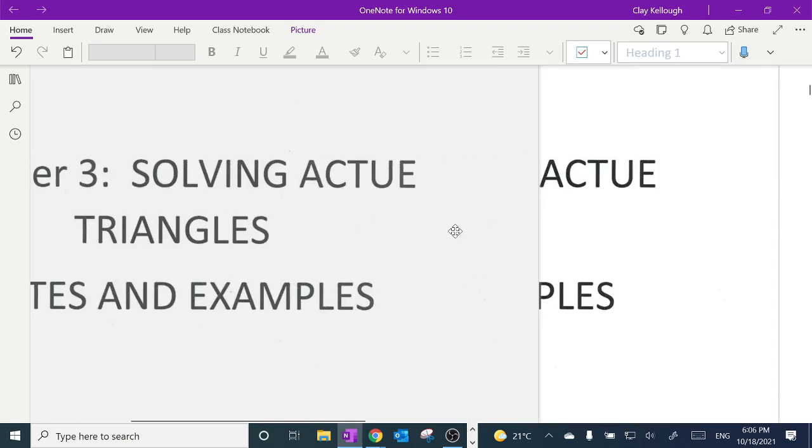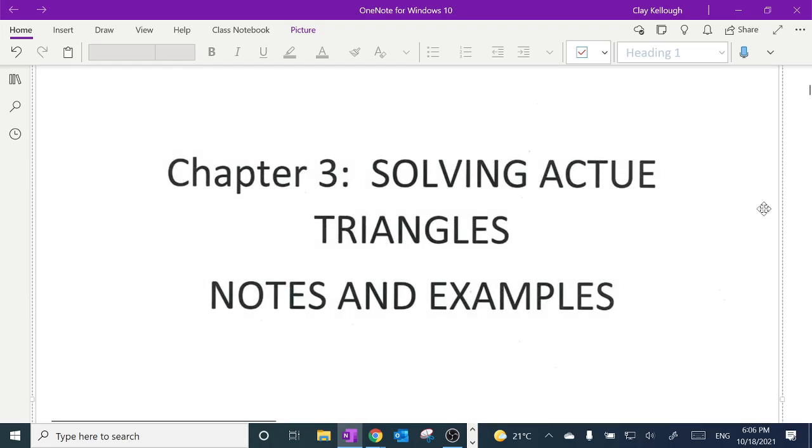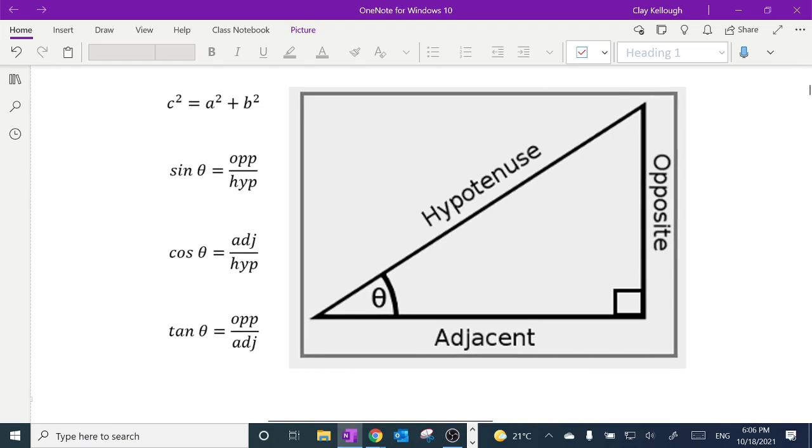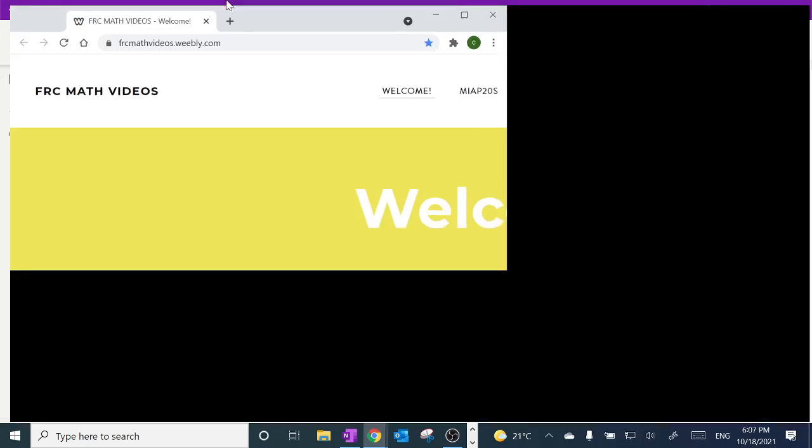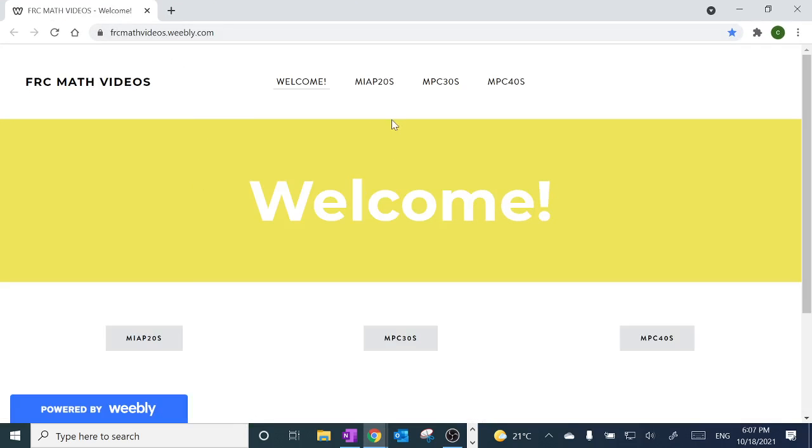So let me just move over here and remind people about good old right angle trigonometry from grade 10 from the MIAP course. If you don't remember how to find missing sides and missing angles using sine, cosine, and tangent, also known as SOHCAHTOA, then I highly recommend that you go back to this page right here, which is the FRC Web Video Archive.